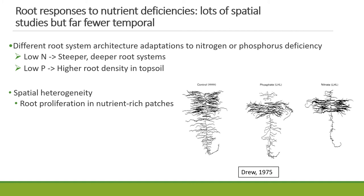When we think about nutrient deficiency and plasticity in roots, we see some general root system architecture adaptations. For example, in low nitrogen soils we can see steeper and deeper root systems, whereas in low phosphorus soils we generally see a higher root density in the topsoil. In addition, spatial heterogeneity is also studied quite well — if there is a nutrient patch, we can see root proliferation there, with root length density increasing in those patches to take up all the nutrients.